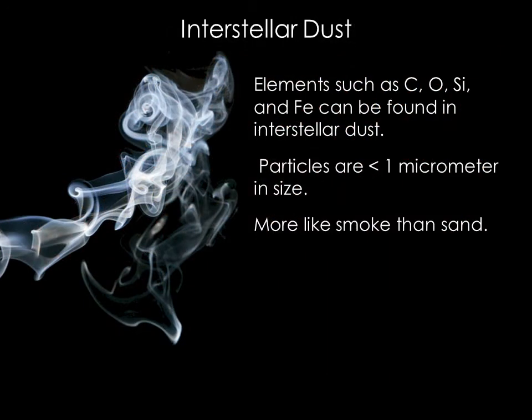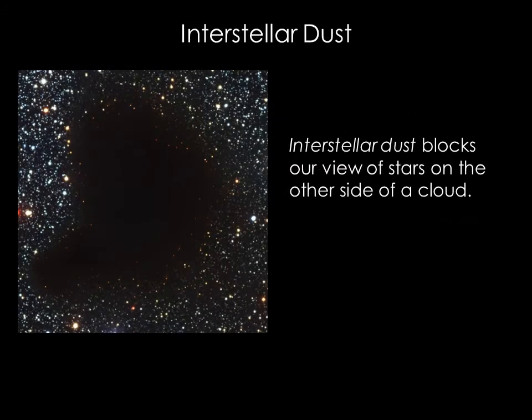Not all the material in a molecular cloud is gaseous. About 1% of the molecular cloud's mass is made up of tiny solid grains of interstellar dust. Despite the tiny size of these grains, there are enough of them that they can affect how light travels through a molecular cloud. The dust grains either scatter or absorb the visible light that enters a cloud, preventing us from seeing any stars that lie behind it.